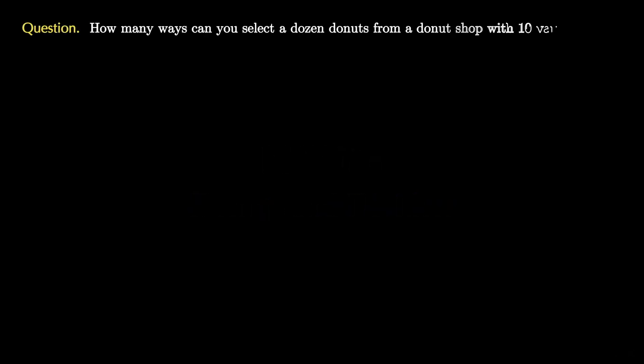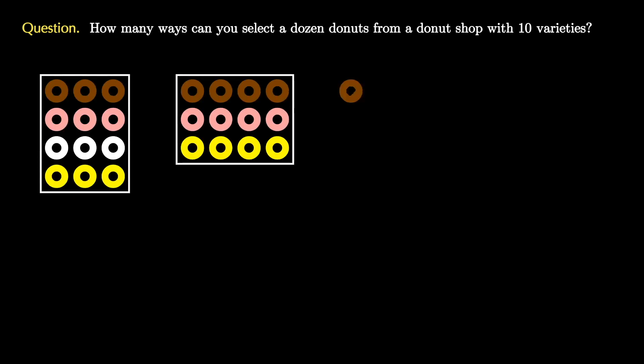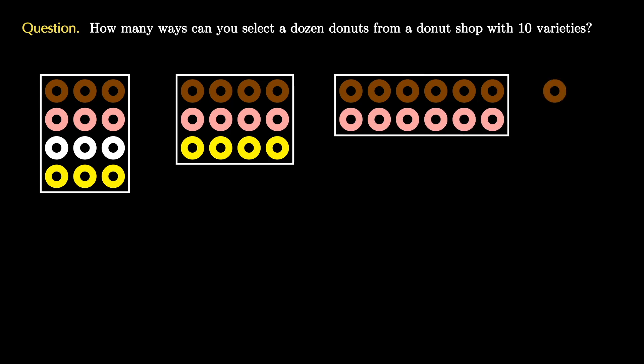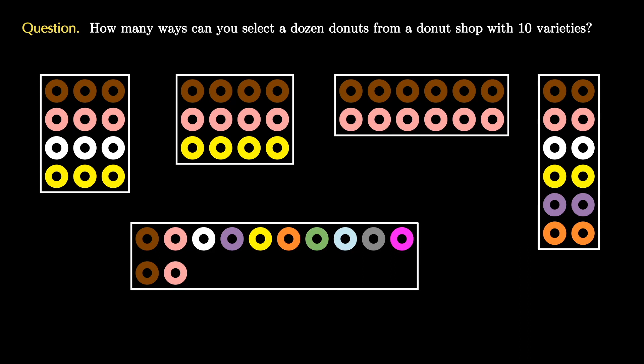How many ways can you select a dozen donuts from a donut shop that has ten varieties? For example, you could select three each of four varieties or four each of three varieties. You could select six each of two varieties or two each of six varieties. You could even select one of each variety and double up on two of them as we have here.